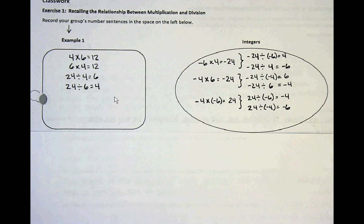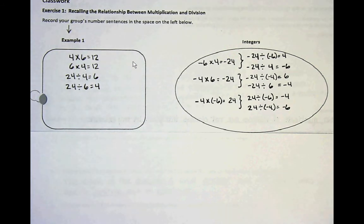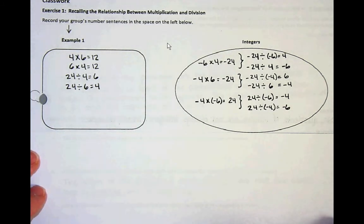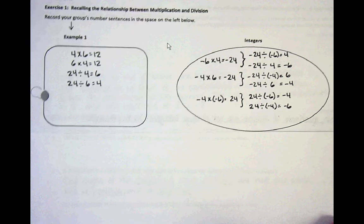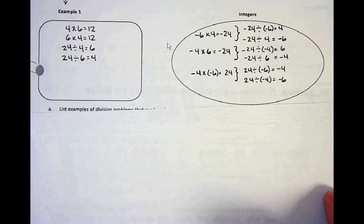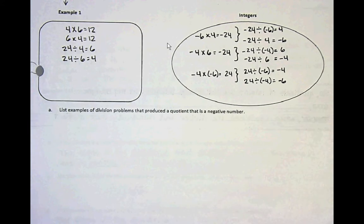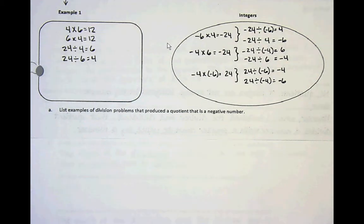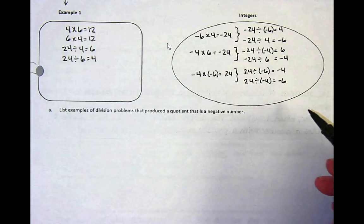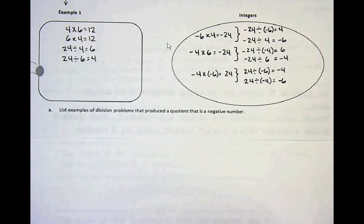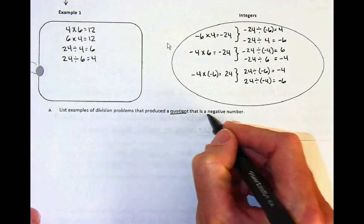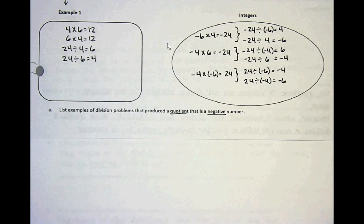When you are done with that, you should have something that looks similar to this. It doesn't matter what fact family you used — I changed to a different fact family. As long as you have something to work with, that is going to be just fine. Now let's answer the first question: list examples of division problems that produced a quotient that is a negative number. Go back up to your integer bubble and write down the examples of the ones that came up with a quotient that is a negative number. Go ahead and do that and we'll meet back.